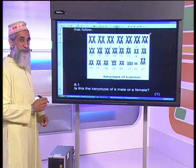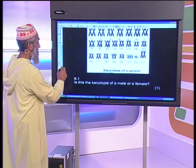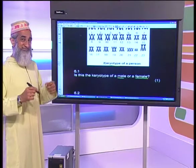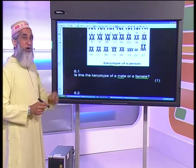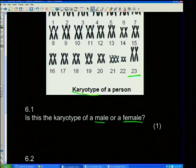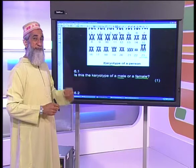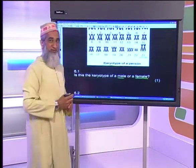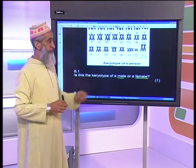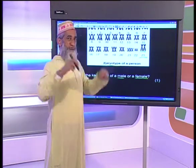The first question: is this the karyotype of a male or a female? To determine the sex of an individual from a karyotype, we only have to look at one set of chromosomes — pair number 23. In this instance you can clearly see that pair number 23 are identical; they look the same. You're not getting one taller and one shorter.